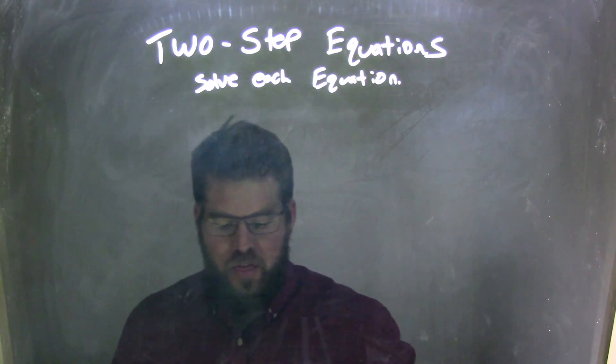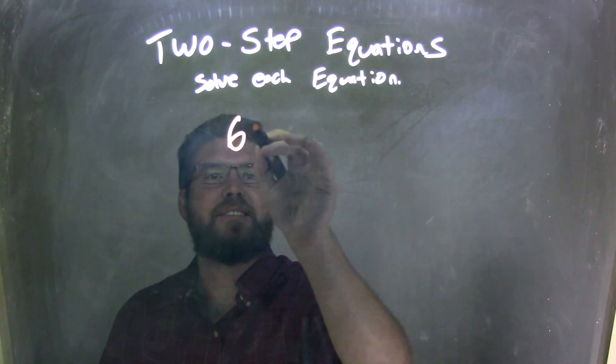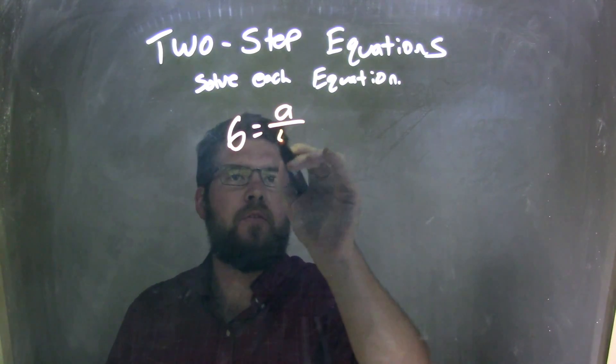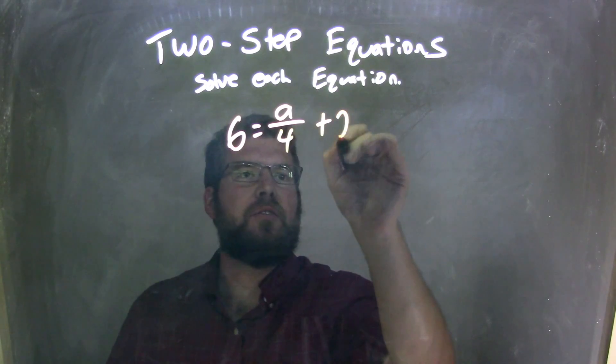So if I was given this equation: 6 equals the letter A over 4 plus 2.